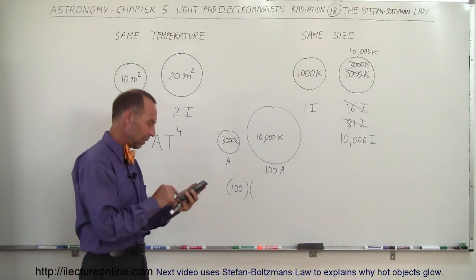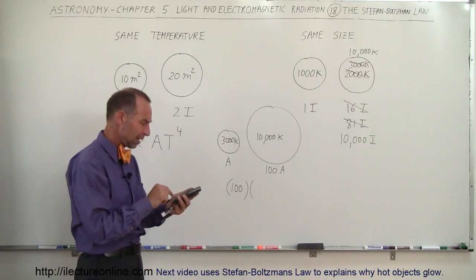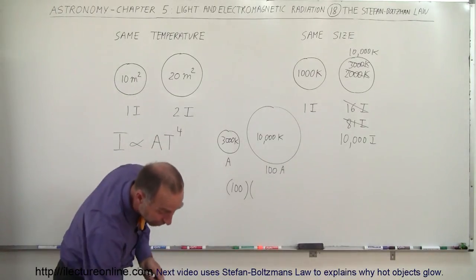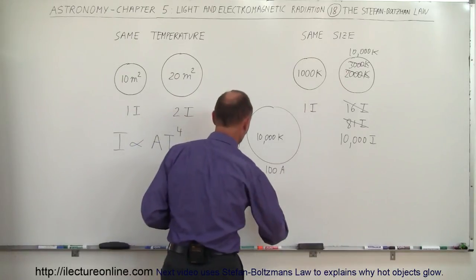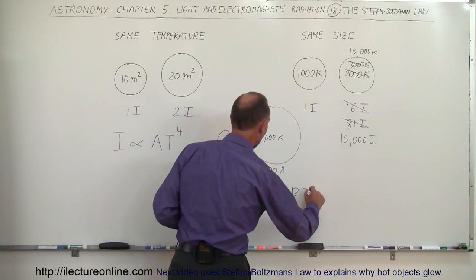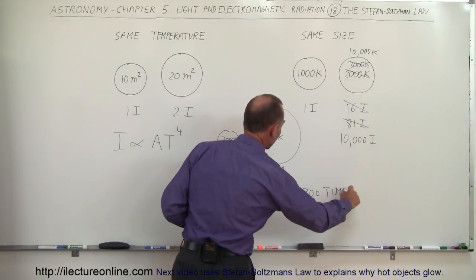We have 10,000 divided by 3,000, and then we square it and square it again. That's 123 times as much energy. So it's 100 times 123. We multiply that, we get 12,300 times as much energy.